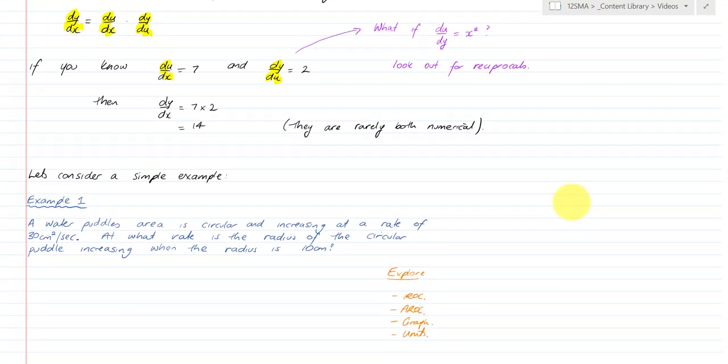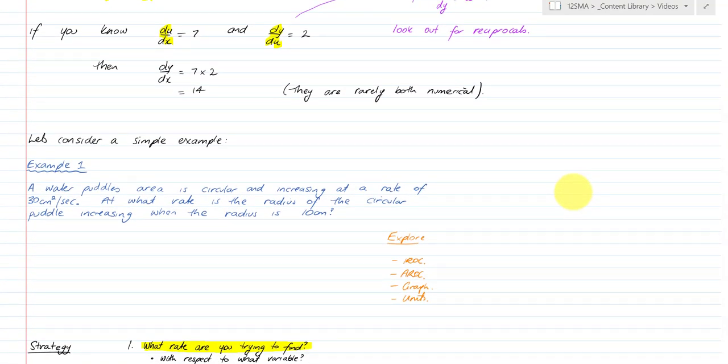A simple example: A water puddle's area is circular and increasing at a rate of 30 cm² per second. At what rate is the radius of the circular puddle increasing when the radius is 10 cm?